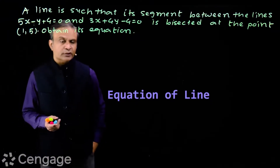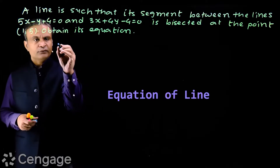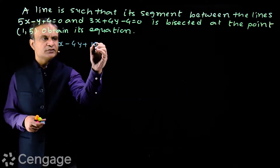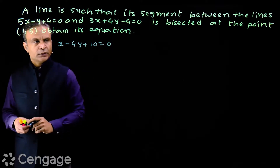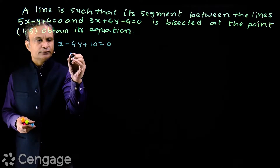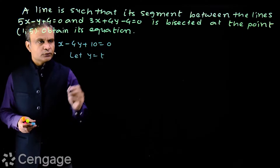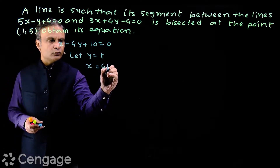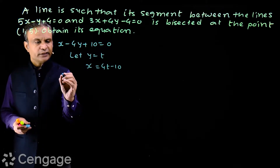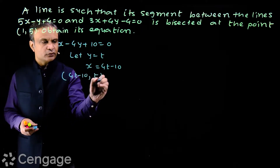It is quite useful to consider a variable point on a straight line. For example, if we have the equation of a straight line x minus 4y plus 10 is equal to 0, then for a variable point on the line we let y equal to t. So we get x equal to 4t minus 10. The variable point on this straight line has coordinates (4t minus 10, t).